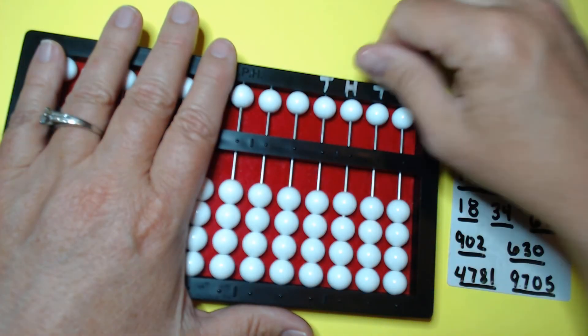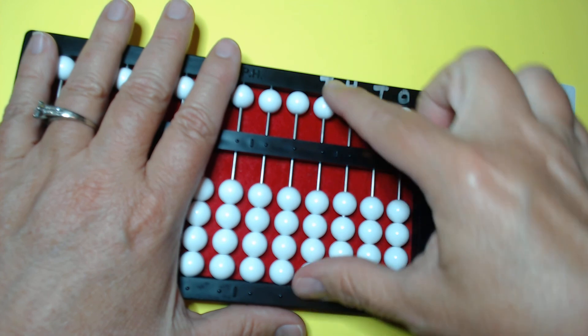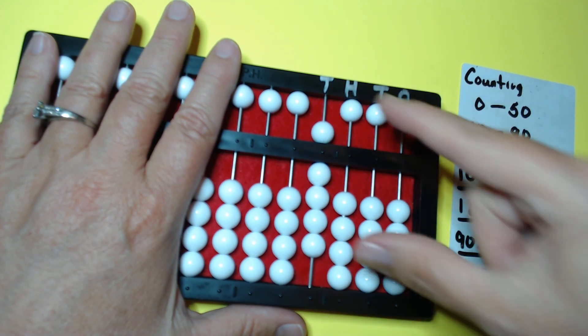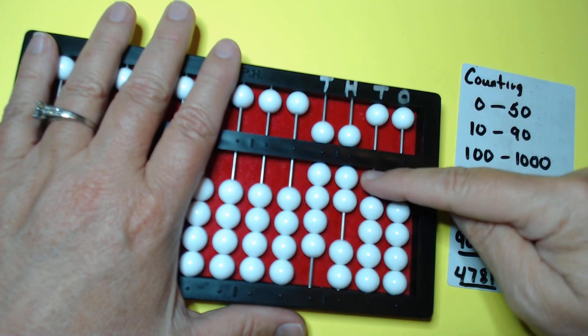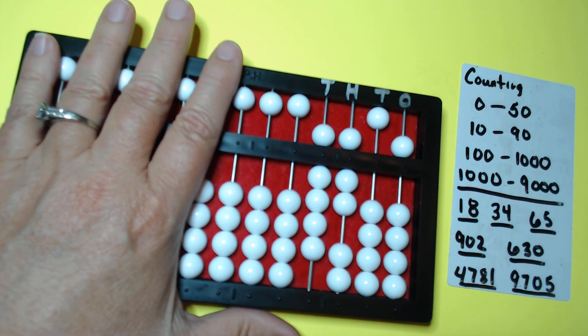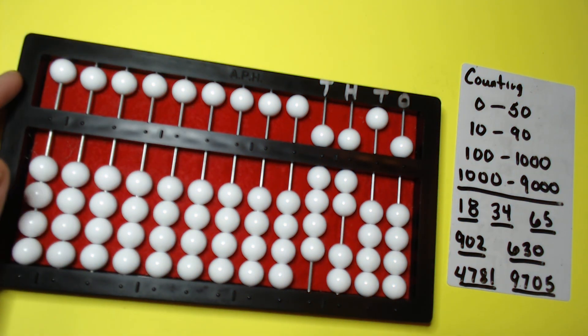Easy peasy, right? That's that nine thousand, seven hundred and five. So remember, nine thousand, seven hundred. Leave that blank. Set my five bead. Boom. Done. Thanks guys. I hope that helps.